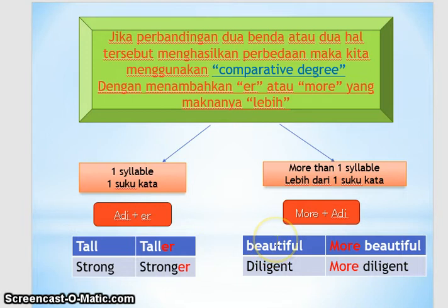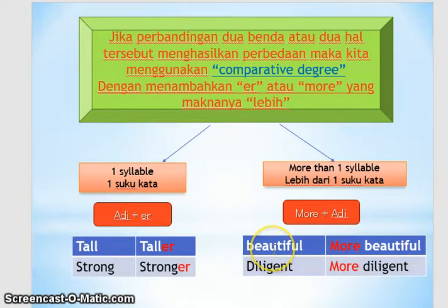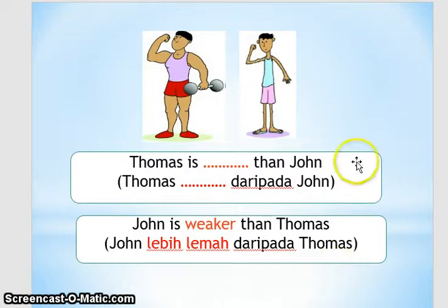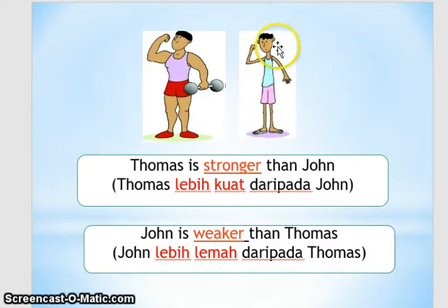Kata beautiful memiliki tiga syllable, sehingga berubah menjadi 'more beautiful'. Kata diligent memiliki tiga syllable, jadi berubah menjadi 'more diligent' yang artinya lebih rajin. Jadi: tall (tinggi) → taller (lebih tinggi), strong (kuat) → stronger (lebih kuat), beautiful (cantik) → more beautiful (lebih cantik), diligent (rajin) → more diligent (lebih rajin). Kalimatnya: 'Thomas is stronger than John,' atau jika diawali John: 'John is weaker than Thomas.'